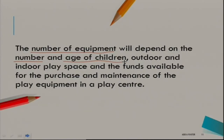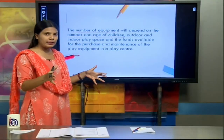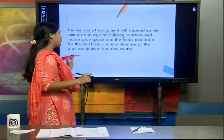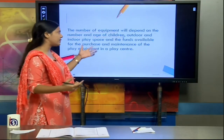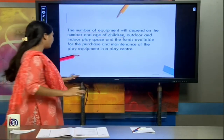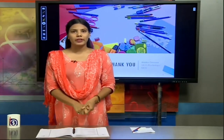For example, puzzles will be required more in the 4 to 5 years age group — if there are 5 children, we need at least 4 puzzles. So the ratio of play equipment depends on the number and age of children, the outdoor and indoor play space available, and the funds available for purchase and maintenance of play equipment in the play center. Thank you so much — if there are any queries, please put them forward in the YouTube section. We will look forward to your queries.